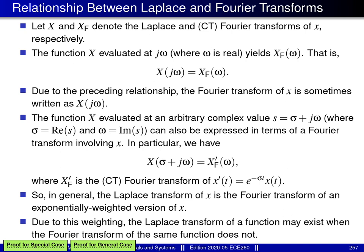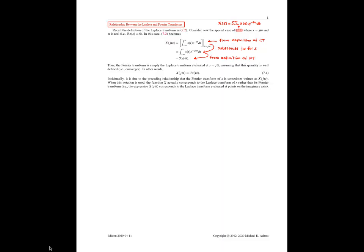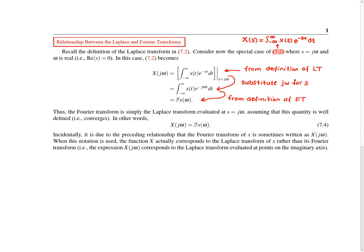At this point, I'd like to prove the two main results presented on this slide. First, I'd like to prove the result that relates the Laplace transform evaluated at a point on the imaginary axis to the Fourier transform. We're asked to show that the Laplace transform evaluated on the imaginary axis yields the continuous time Fourier transform.